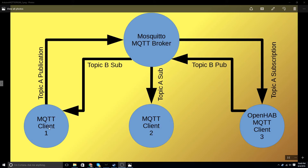MQTT consists of messages that go back and forth between the client and the broker. Each message is about an event, and events have two parts. The first part is a topic — here I show a topic A publication. The second part is the content or message associated with the event. Both the topic and the message are strings.